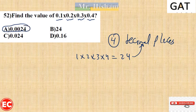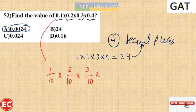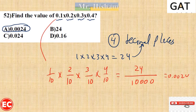An alternative method: write each decimal as a fraction — 1/10 times 2/10 times 3/10 times 4/10 — which equals 24 over 10,000, giving the same answer: 0.0024.